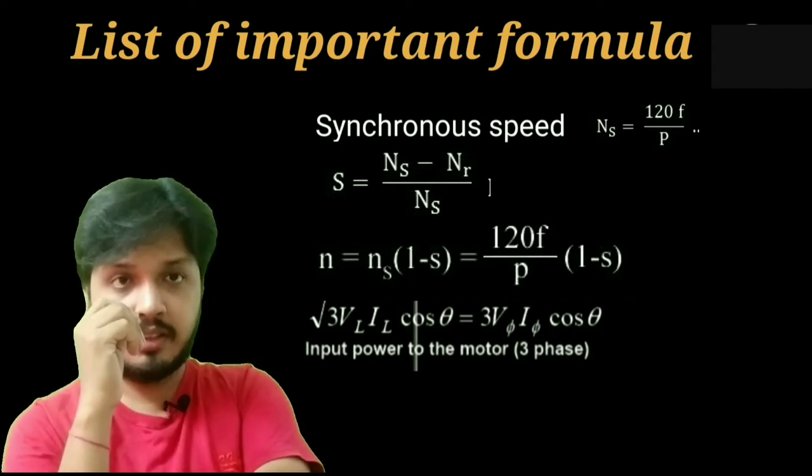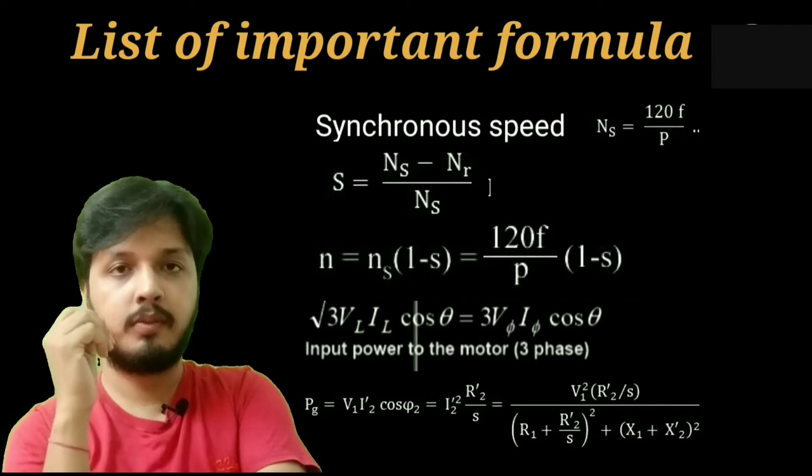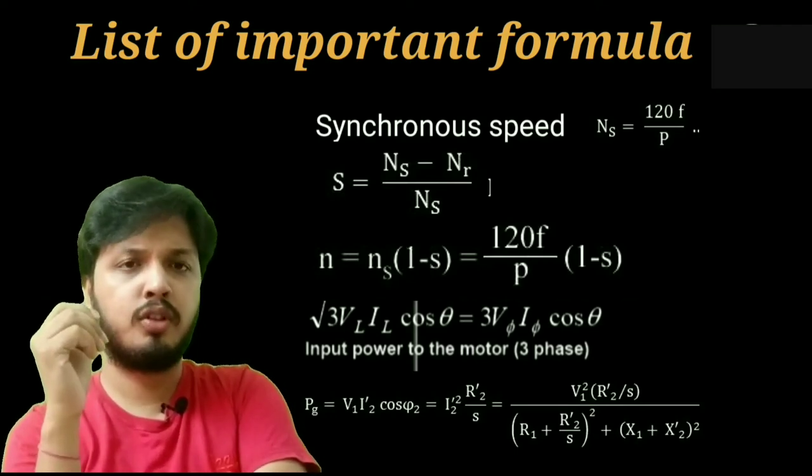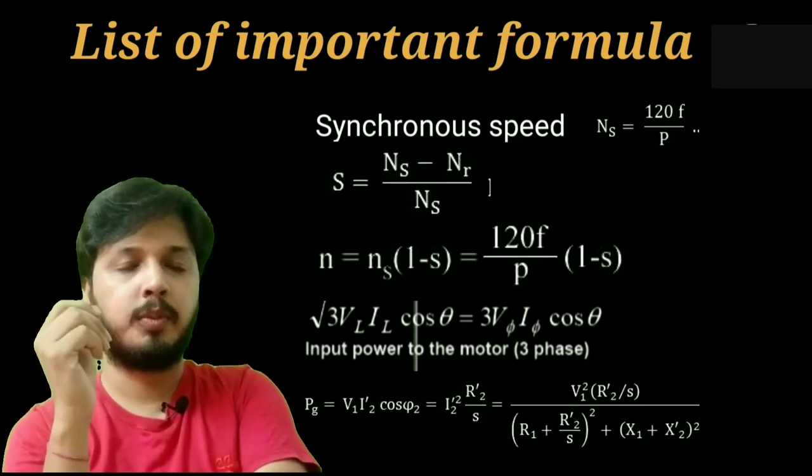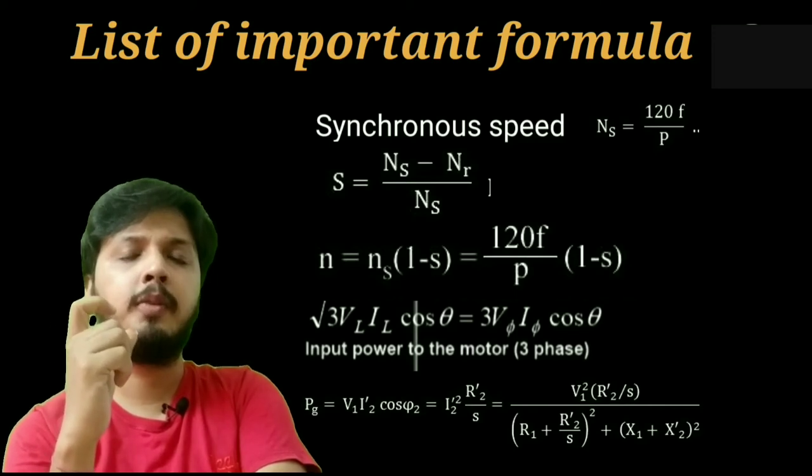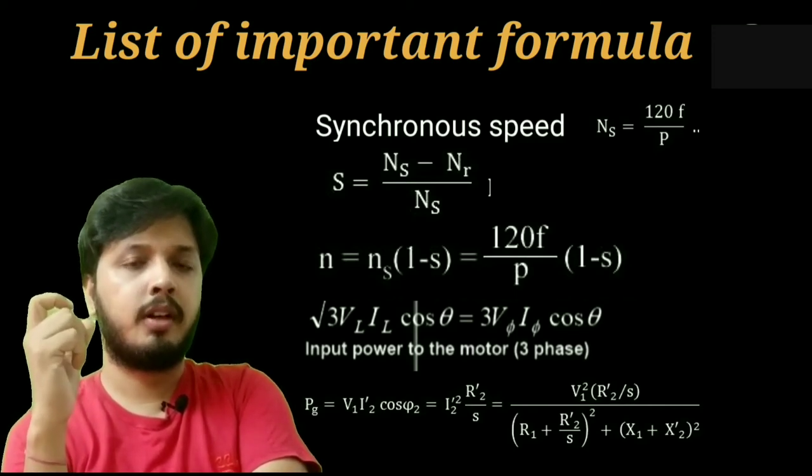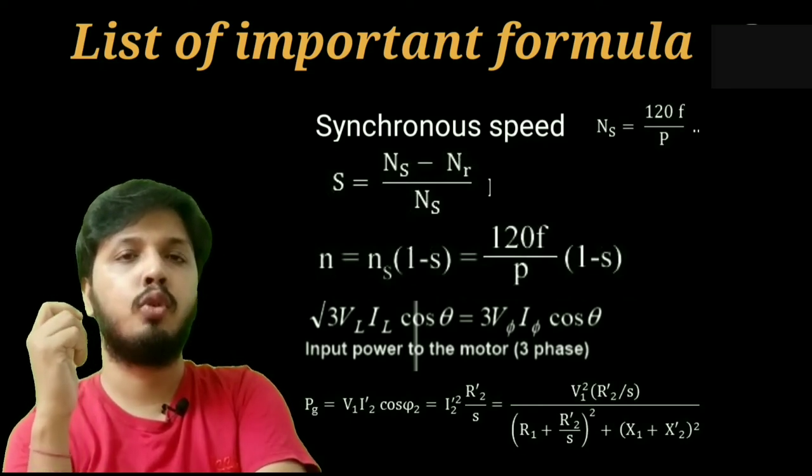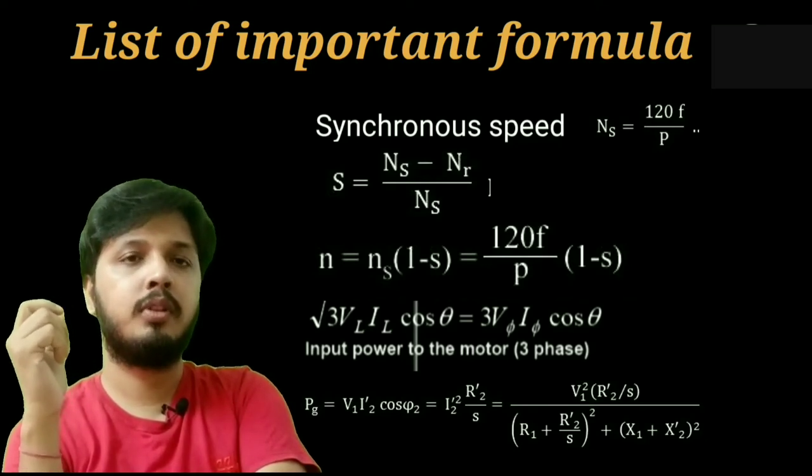Now we will discuss about air gap power. Air gap power equals input power minus stator copper loss minus stator core loss. We can also write that air gap power is rotor copper loss plus mechanical power developed. And we know that mechanical power developed equals friction and windage loss plus mechanical power output at shaft. Therefore, we can write that air gap power equals rotor copper loss plus friction and windage loss plus mechanical power output at shaft.